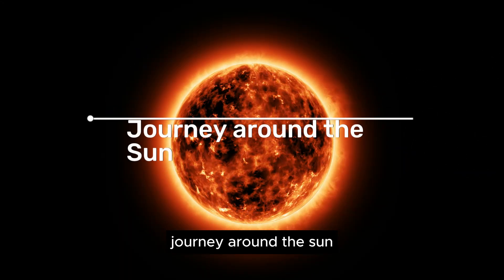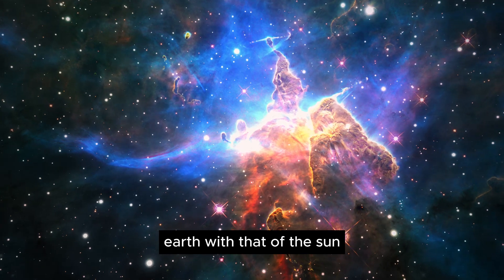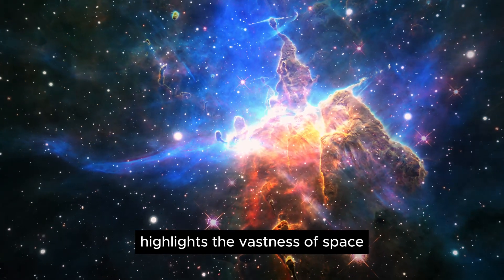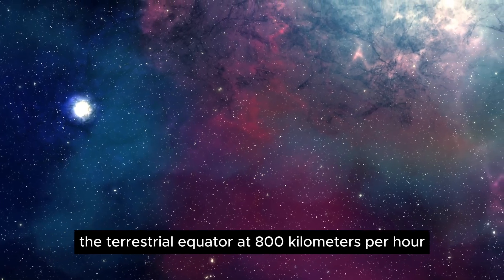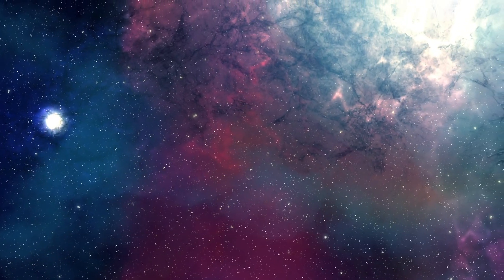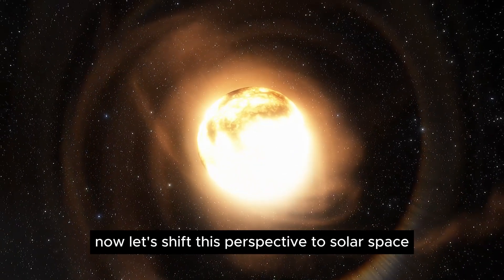Journey around the sun: comparing the time required to circumnavigate Earth with that of the sun highlights the vastness of space. If we consider a continuous flight around the terrestrial equator at 800 kilometers per hour, we face a period of almost 48 hours.